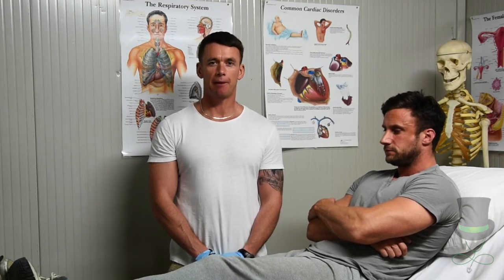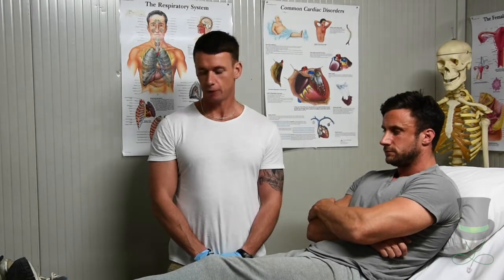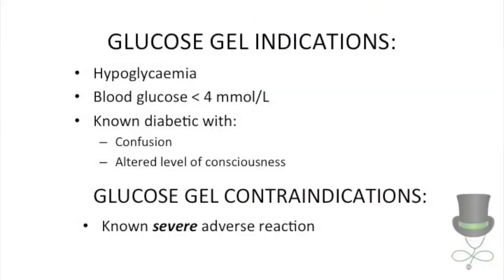Hi, I'm Anthony and I'm a paramedic and today I'm going to demonstrate how to administer glucose gel. The indications for glucose gel administration are hypoglycemia, a blood glucose of less than four millimoles per litre, or a known diabetic who is presenting with confusion or an altered level of consciousness.